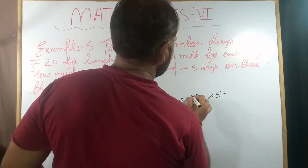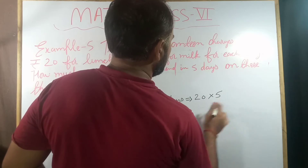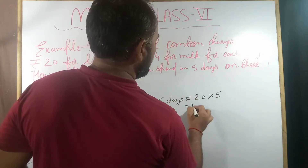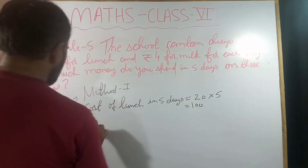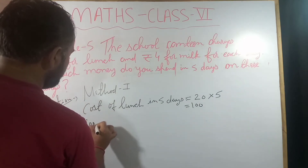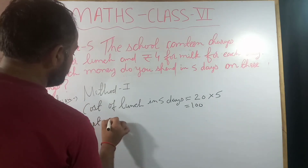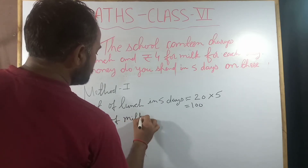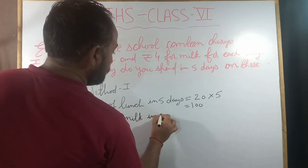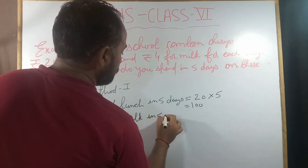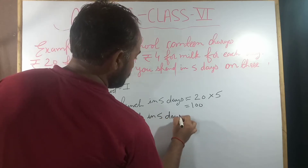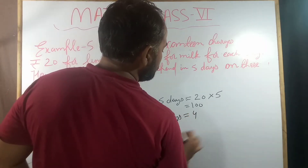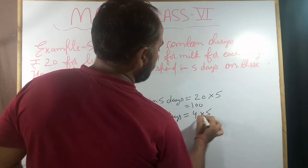So 20 multiplied by 5 gives us 100 rupees for lunch in five days. Now we find the cost of milk. The cost of milk in five days: one day price is 4 rupees, and we have to find it for five days.